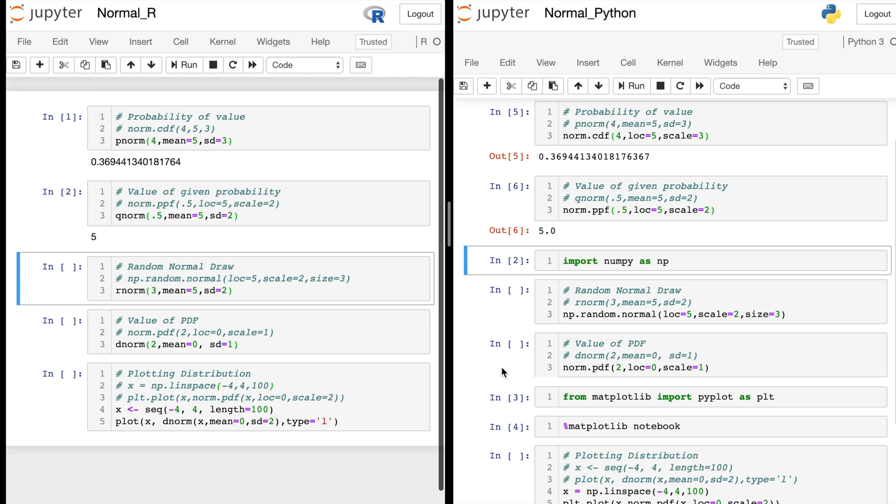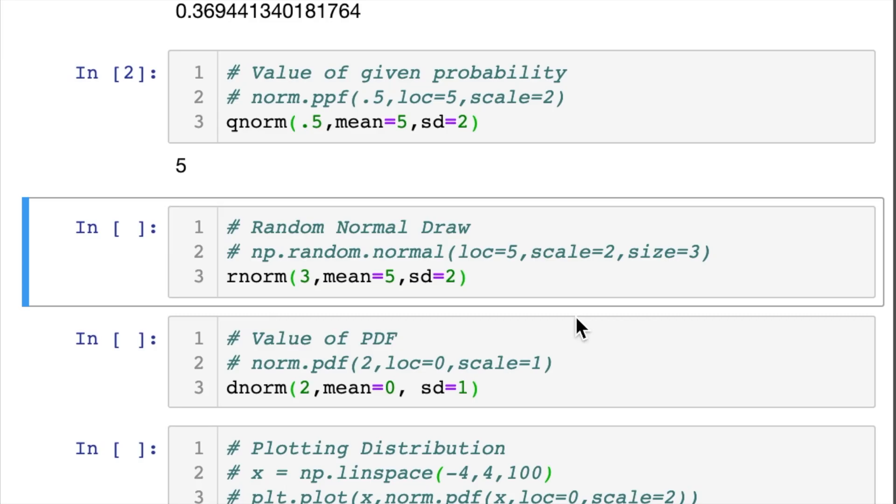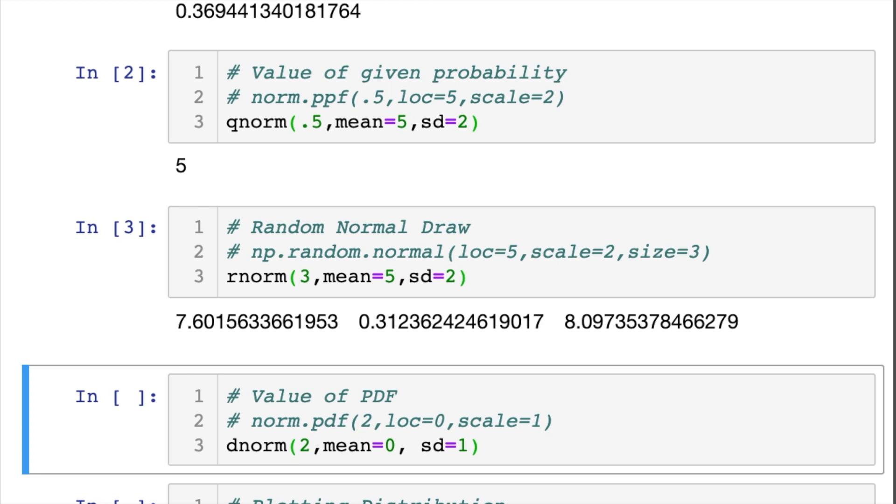Now, let's suppose you want a random draw from a normal distribution. In R, you do this with RNorm. You say you want three random draws from a normal with mean 5 and standard deviation 2. In Python, you can do this with np.random.normal. You give it the mean and standard deviation first. And last, you give it the size. So we do size equals 3.